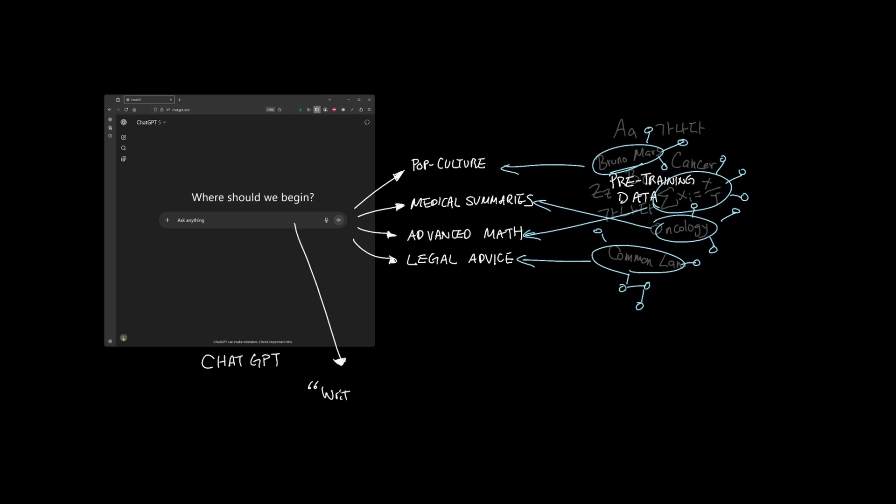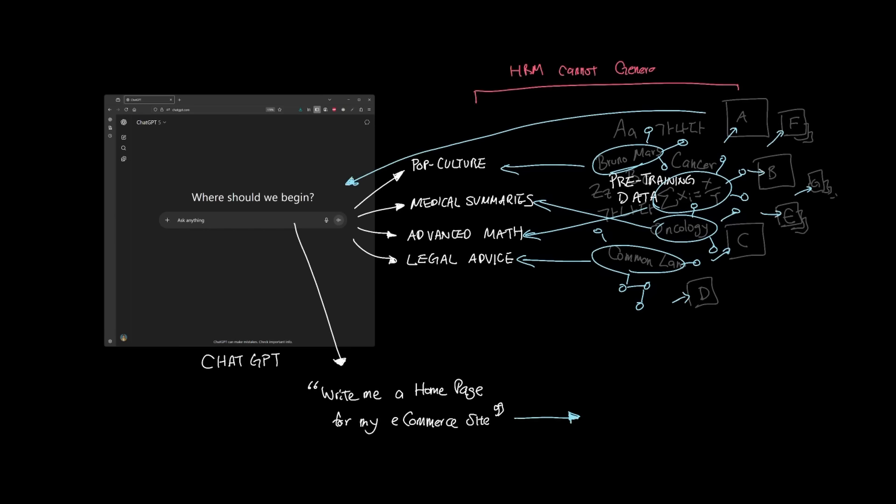So if I asked an LLM to write a homepage for my e-commerce site, the LLM can draw from hundreds and thousands of different examples of e-commerce sites that were included in the pre-training data and generalize it for the task at hand. HRM is incapable of doing something like this because it's not a foundation model that can generalize on tasks.